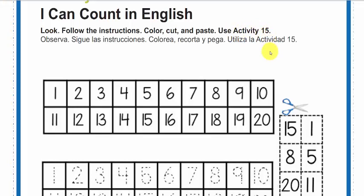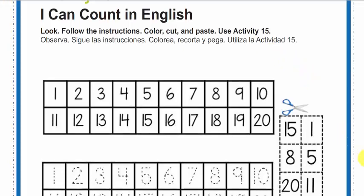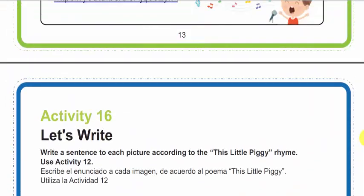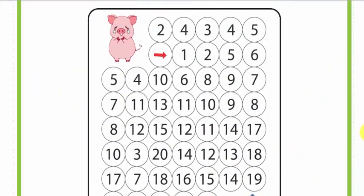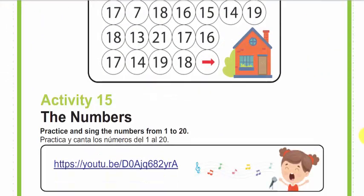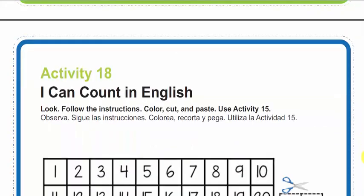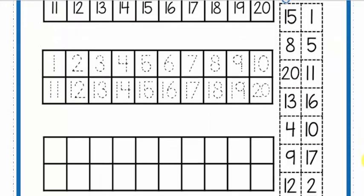Vamos a observar y seguir las instrucciones: recortar, colorear y pegar. Y también nos vamos a apoyar con la actividad número 15. Nos vamos un poquito hacia atrás y nos damos cuenta que la 15 es esta, donde contamos los números del 1 al 20. Pues ahora vamos a necesitar nuevamente esos números del 1 al 20.